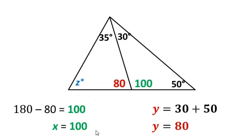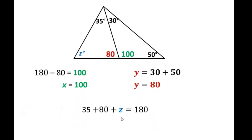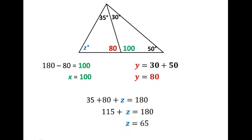We have one angle left, angle z. Now I'm going to use the triangle sum theorem. These three angles here add up to 180 degrees. So I'm going to set up an equation: 35 plus 80 plus z equals 180. And then simplify. 35 plus 80 is 115. And then if I subtract 115 from both sides, that would leave me with z equals 65.